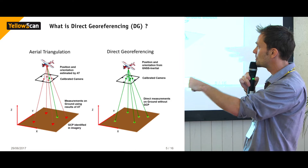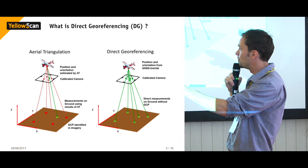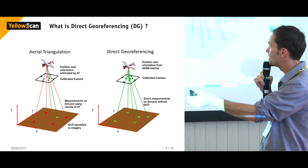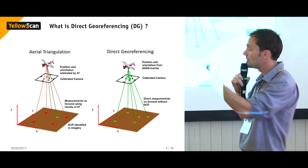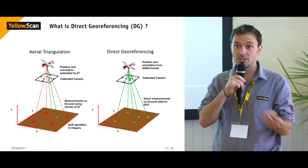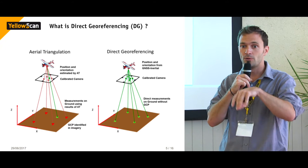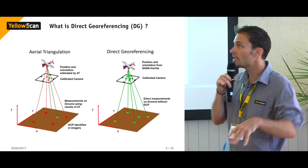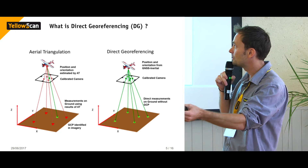This could be images or LiDAR point cloud. You're identifying ground control points and tie points. With aerial triangulation, you reposition not only the position of your platform, but also the orientation of your platform from those tie points and ground control points. Then you can generate your orthophotos and so on.